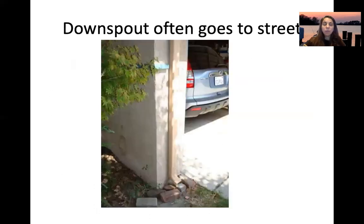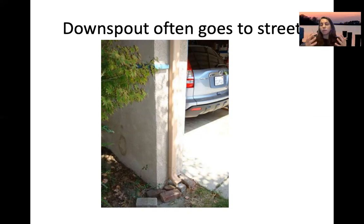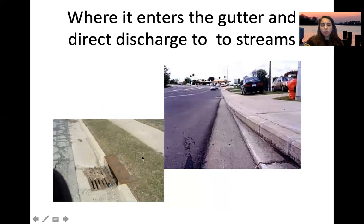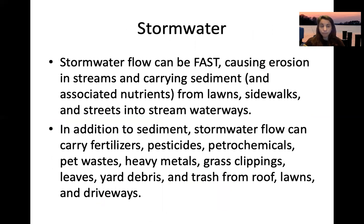Downspouts from a roof carry all the rain from that entire roof side to one point, which is often directed toward the street. From the streets, water goes into gutters that often go straight to water bodies. Stormwater flow can be fast, causing erosion and carrying sediment, nutrients, fertilizers, pesticides, petrochemicals, pet waste, heavy metals, grass clippings, leaves, and trash into waterways.